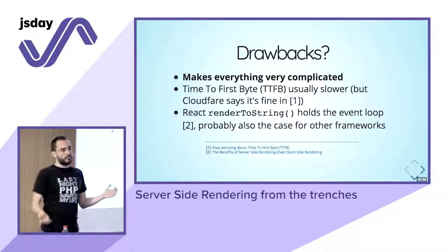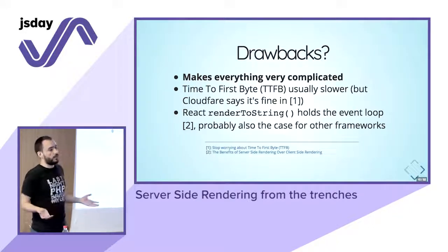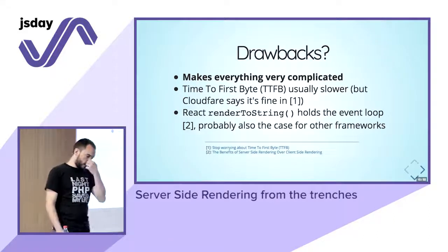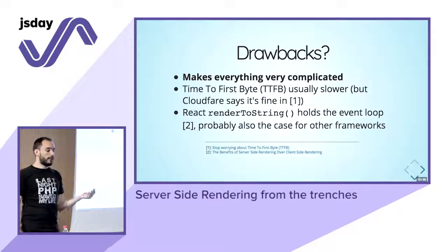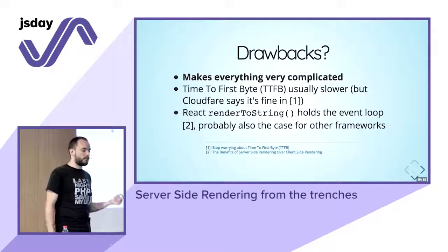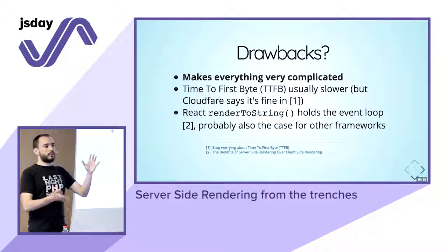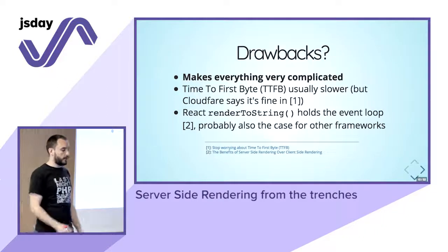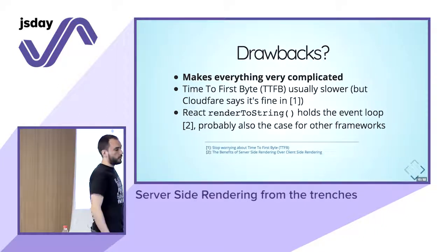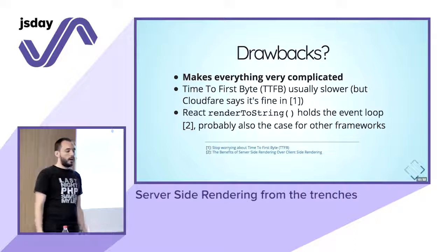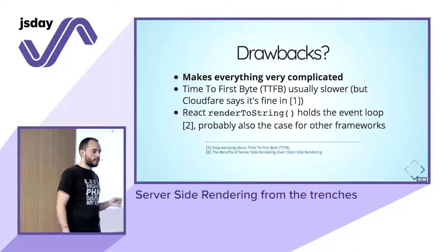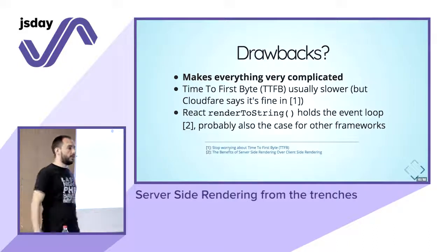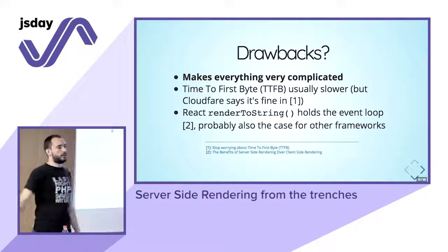CloudFlare says time to first byte is not a good metric, so that would be fine — but it's still good to know. Also, depending on the framework you use, for instance with React, the renderToString method — the method used to get the UI tree and get back the HTML — holds the event loop, the Node loop. So you cannot process another request on this server until you get the HTML.